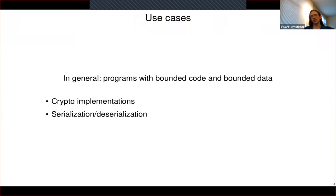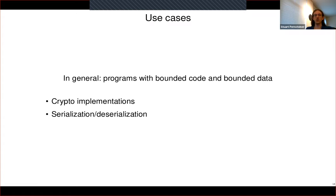The main use cases for CruxMirror and Crux in general are programs that have bounded code and bounded data — they run for a bounded amount of time, all loops have some finite bound that the solver can easily discover, and they work with bounded data structures. This works really well for crypto implementations where you're running exactly N rounds of an algorithm and your block size is exactly X bytes. We've also had some luck using this for verifying that serialization and deserialization code has been written correctly.